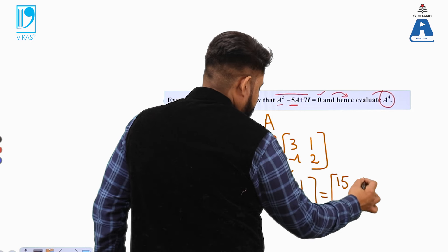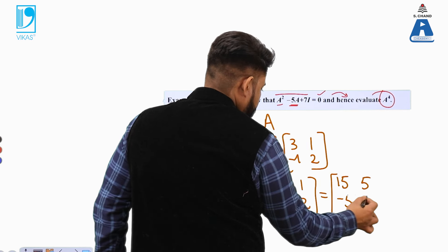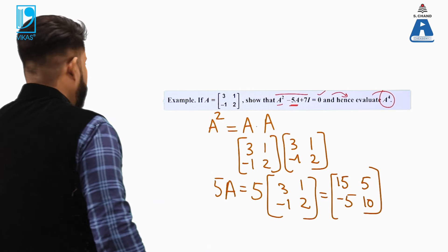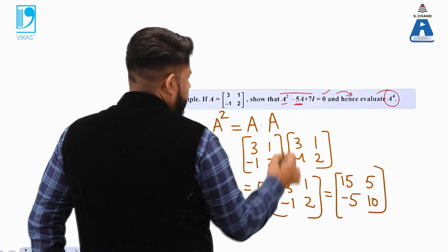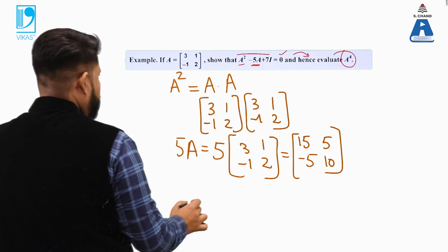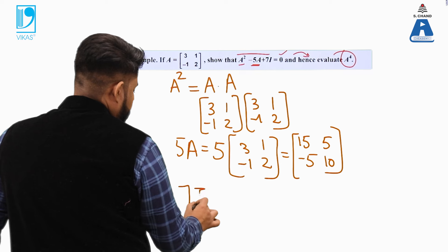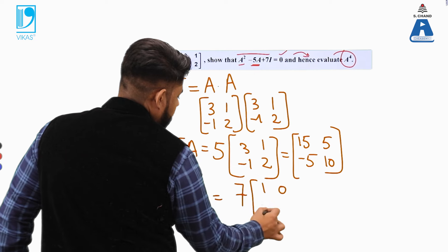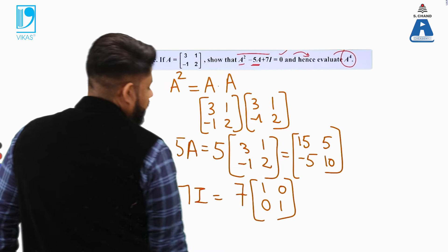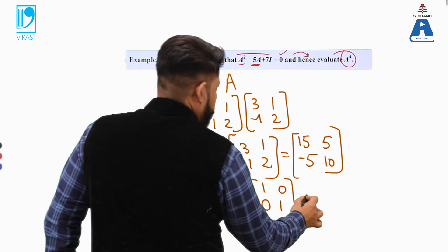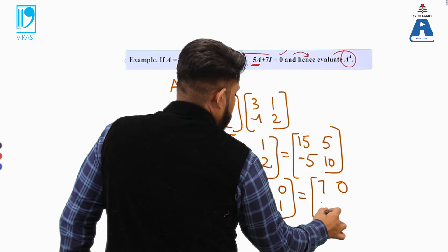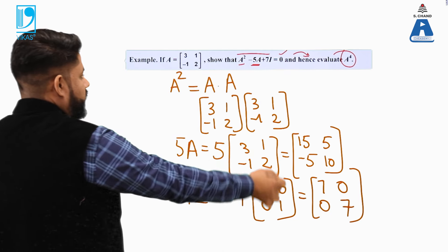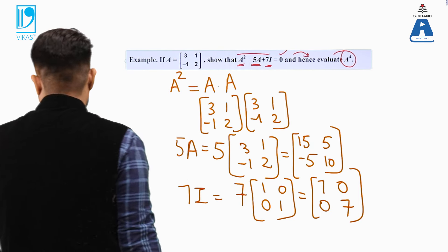The next question involves scalar multiplication and the identity matrix. You have a 5A term: multiply the scalar 5 with the matrix, meaning all elements get multiplied by 5. For the 7I term, I is the 2×2 identity matrix [[1,0],[0,1]], so 7I = [[7,0],[0,7]].